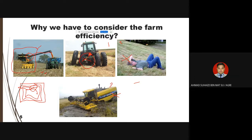Situations that affect field efficiency include: first, if there is a breakdown — if the tractor breaks down during ploughing or harvesting, the operation is stalled and that time cannot be counted as productive work area, though workers still get paid.